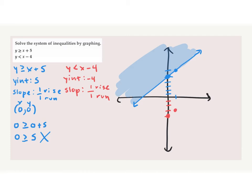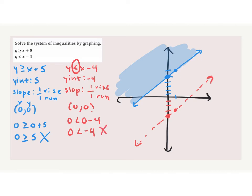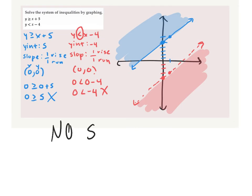We go up 1, over 1, and put a point there. Do we connect the two points with a solid or dotted line? Dotted — since it's just less than, it's a dotted line. Now we find where to shade by plugging in (0, 0): 0 < 0 − 4, so 0 < −4. Is this true? No. So we shade where (0, 0) is not, which is below. Do we have any purple overlapping parts? No — so our answer is no solution. If there is no overlapping region, the answer is no solution.